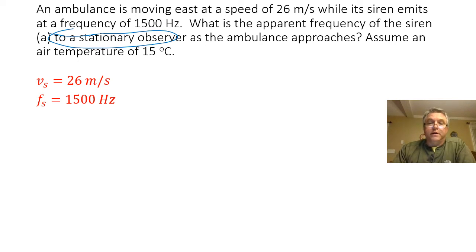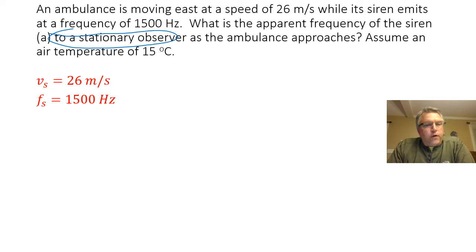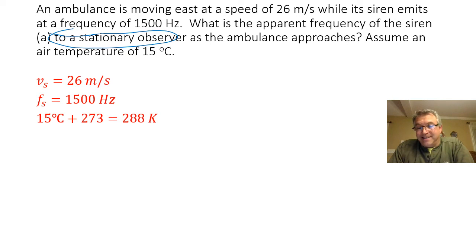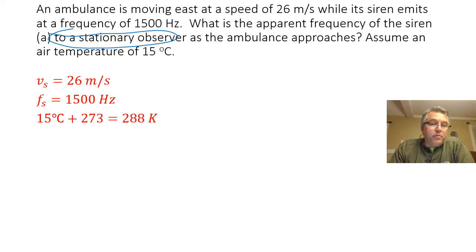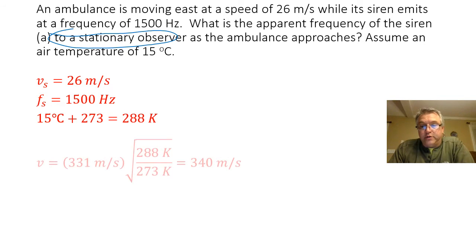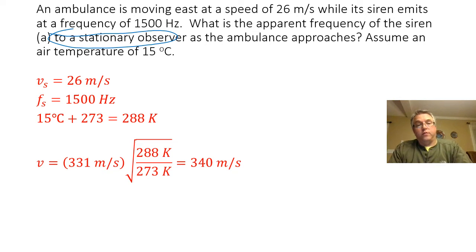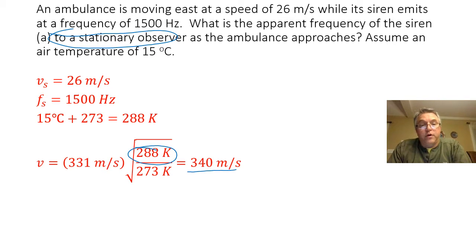Before I can calculate the speed of the sound wave, I need to convert my temperature from Celsius to Kelvin. I have to add 273 to my Celsius temperature. 15 plus 273 gives me a temperature of 288 Kelvin. I can then plug that temperature into my speed of sound in air formula, and when I plug 288 Kelvin into that formula, I get a velocity of the sound wave of 340 meters per second.